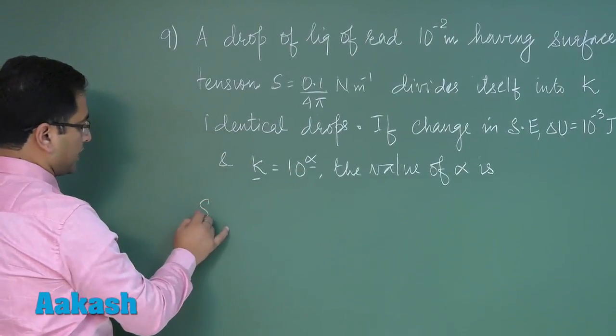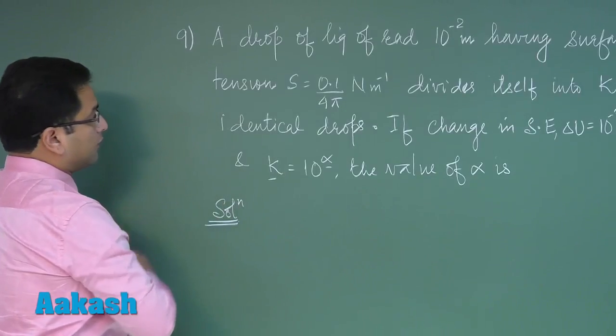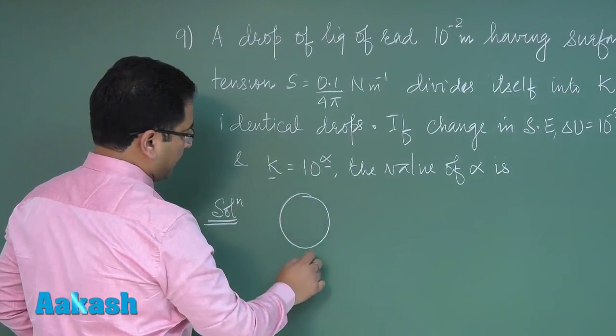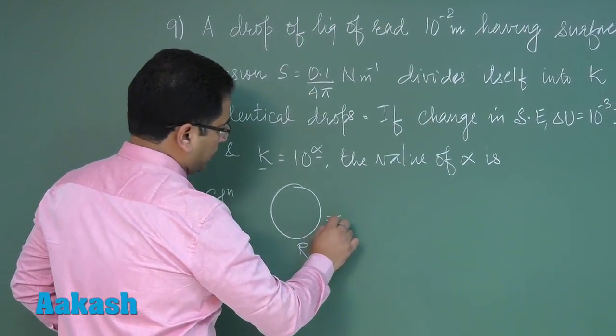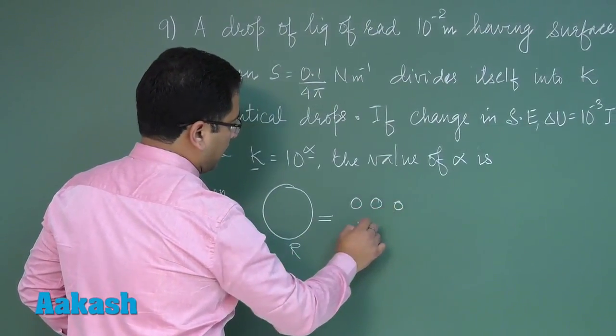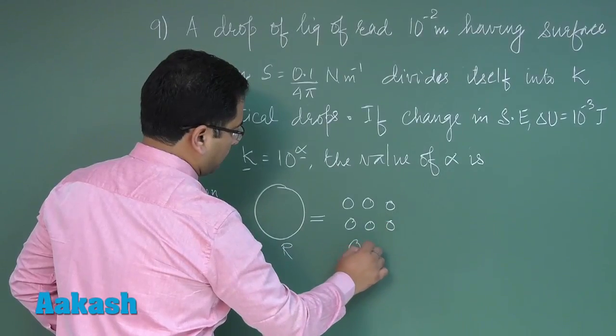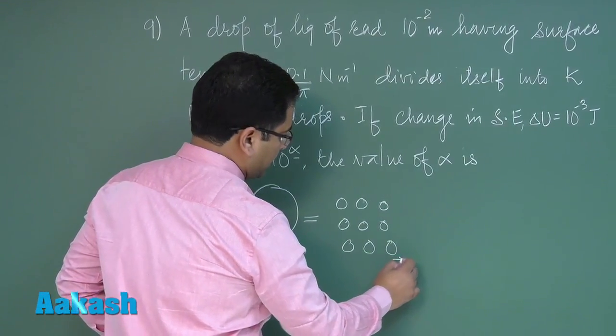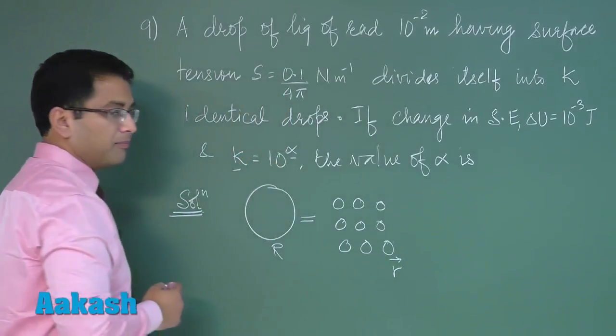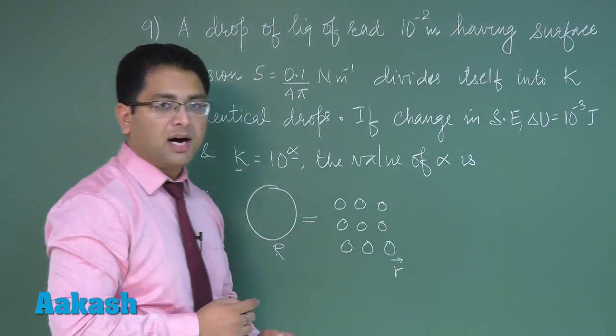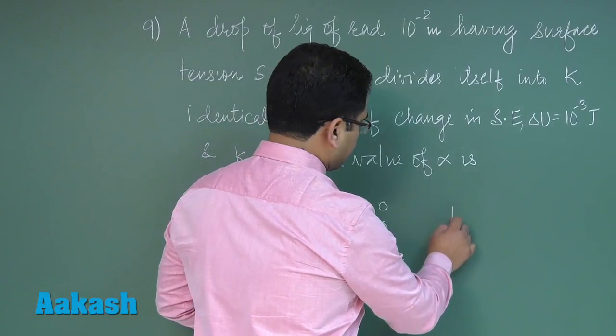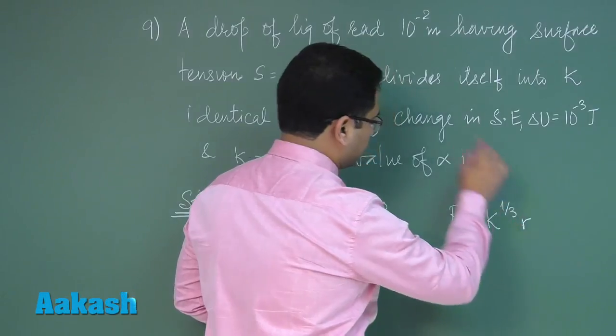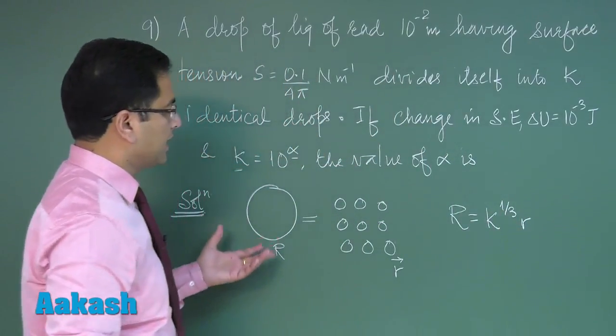Let's see, if the larger drop has radius R, it divides into k identical small droplets, each with radius r. By conservation of mass, we can easily derive the relation: r = R/k^(1/3). The idea is simple: initial volume equals final volume.